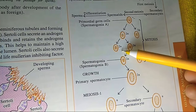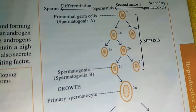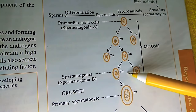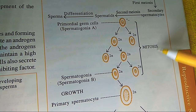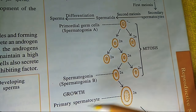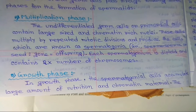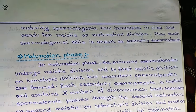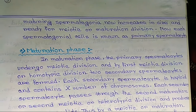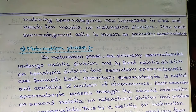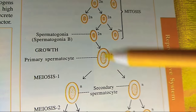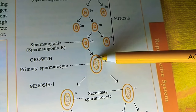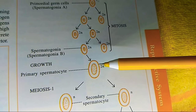The next phase is the growth phase. In the growth phase, the spermatogonial cells accumulate a large amount of nutrition and chromatin material. The maturing spermatogonia increase in size and become ready for meiotic or maturation division. At this point each spermatogonial cell is known as a primary spermatocyte.